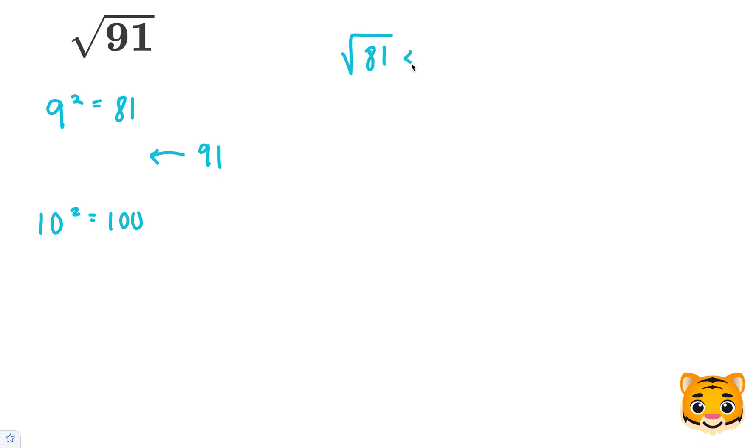The square root of 81 is less than the square root of 91, which is less than the square root of 100. And then we can rewrite the square root of 81 as 9, and we can write the square root of 100 as 10. Now we can see that the square root of 91 lies between 9 and 10.